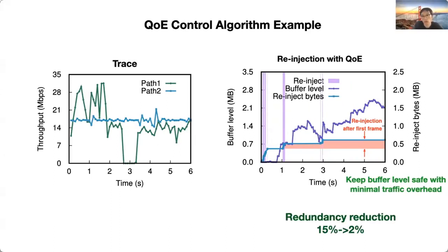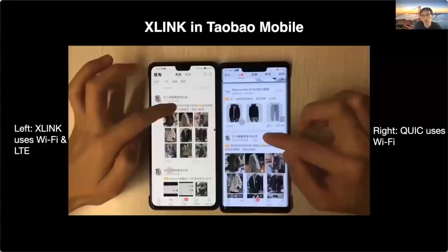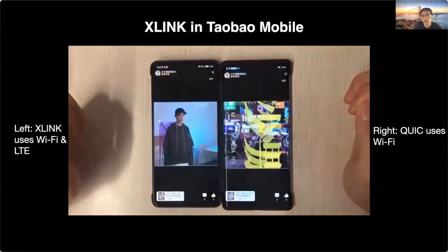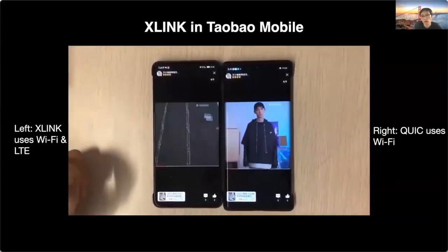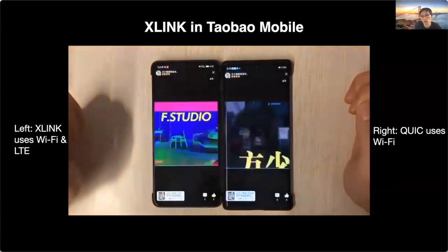We performed a large-scale A/B test in Taobao Mobile with 100K participants over two weeks, covering over 3 million video plays. X-Link integrates with Taobao Mobile Android app on the client side and is deployed on edge servers. The X-Link protocol is designed based on our IETF draft. In a demo of X-Link in Taobao's short video, X-Link using Wi-Fi and LTE starts much quicker and remains smooth throughout, while single-path QUIC with Wi-Fi suffers from strong rebuffering due to unstable Wi-Fi connection.